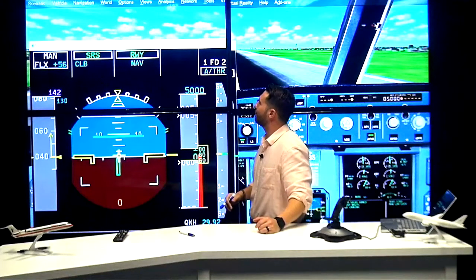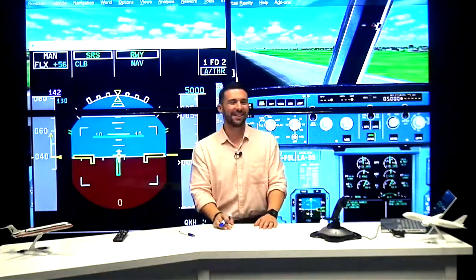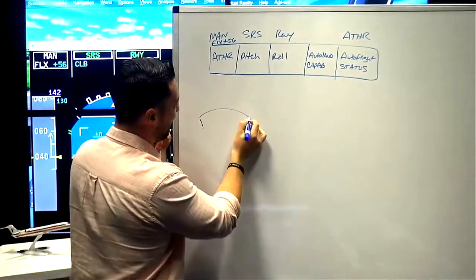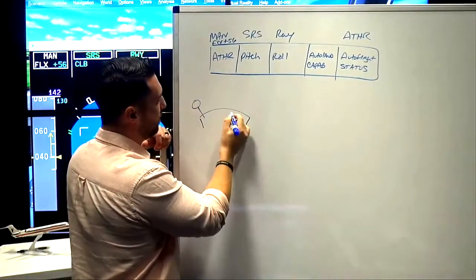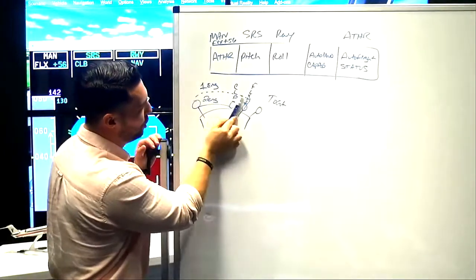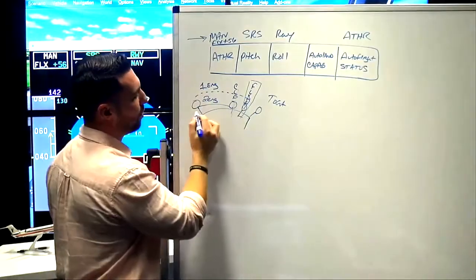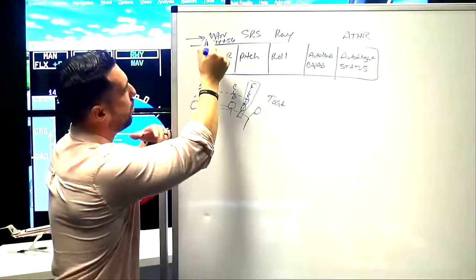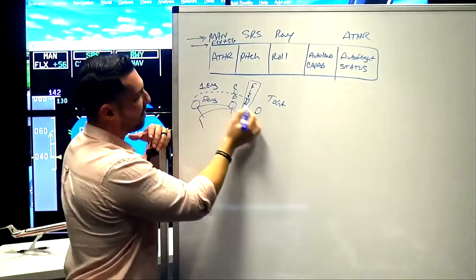Manual flex 56, SRS, runway, auto thrust blue - what does all that mean? The auto thrust active range is just above idle up to and including climb detent with two engines. Brought the thrust levers up to the flex MCT position. The auto thrust has no authority right now, but we're in manual thrust because we're outside of the active range of two engines.